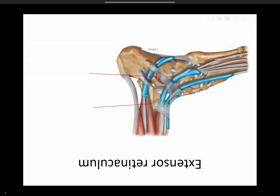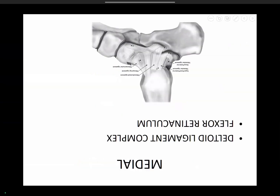Anteriorly, the extensor retinaculum has two bands. The superior band is supramalleolar, binding the tibialis anterior, extensor hallucis, and extensor digitorum longus to prevent them from slipping. Inferior to it is the Y-shaped inferior extensor retinaculum, attaching to the calcaneum anterior to the peroneal tendons. This inferior extensor retinaculum also forms a part of the sinus tarsi.